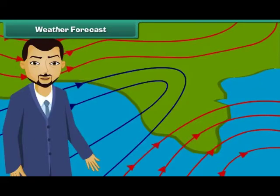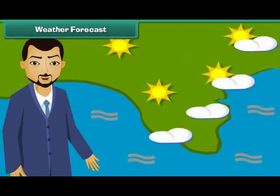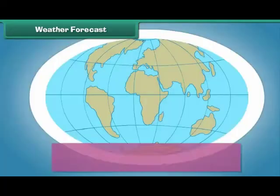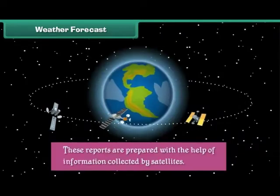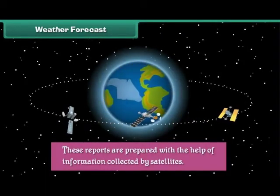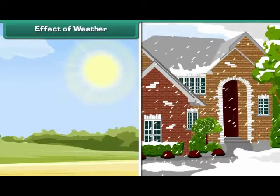Prediction of the future weather conditions of an area is called weather forecast. Weather forecast predicts the temperature, humidity and possibility of rainfalls in a particular area in the near future. Weather reports tell us the weather conditions prevailing in different parts of the world. These reports are prepared with the help of information collected by satellites.